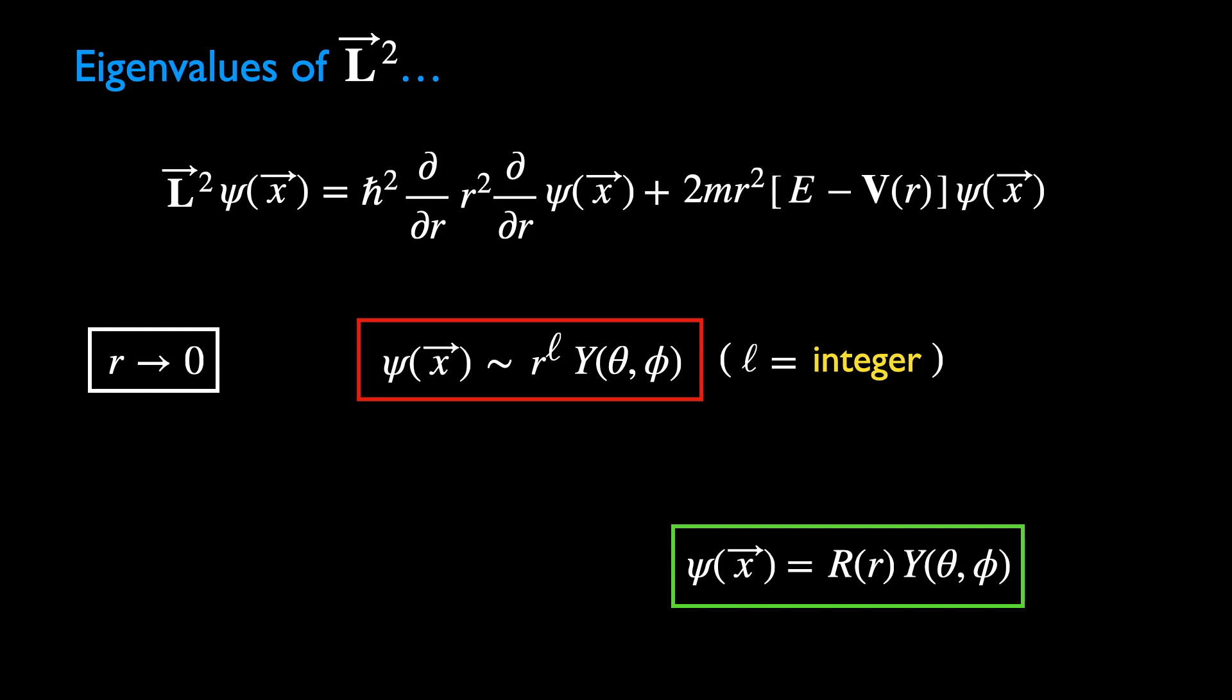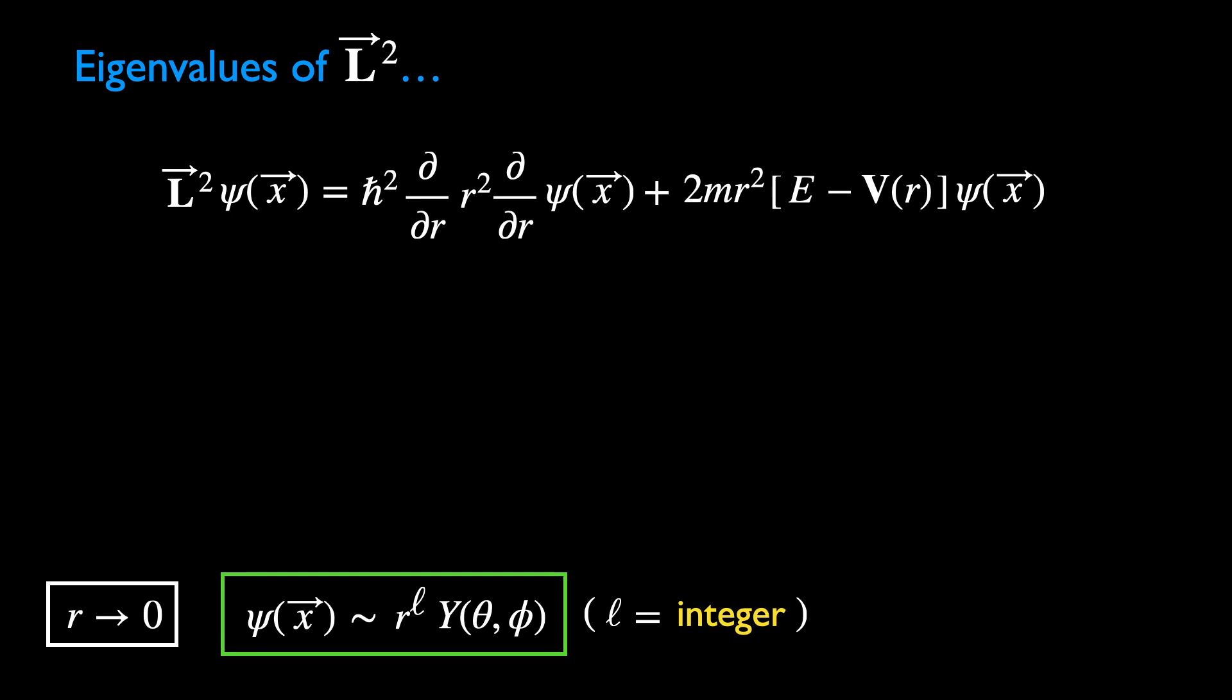Therefore, the energy eigenfunction psi approaches the form in the red box as r goes to 0. Let's plug this back into the equation for L-square.